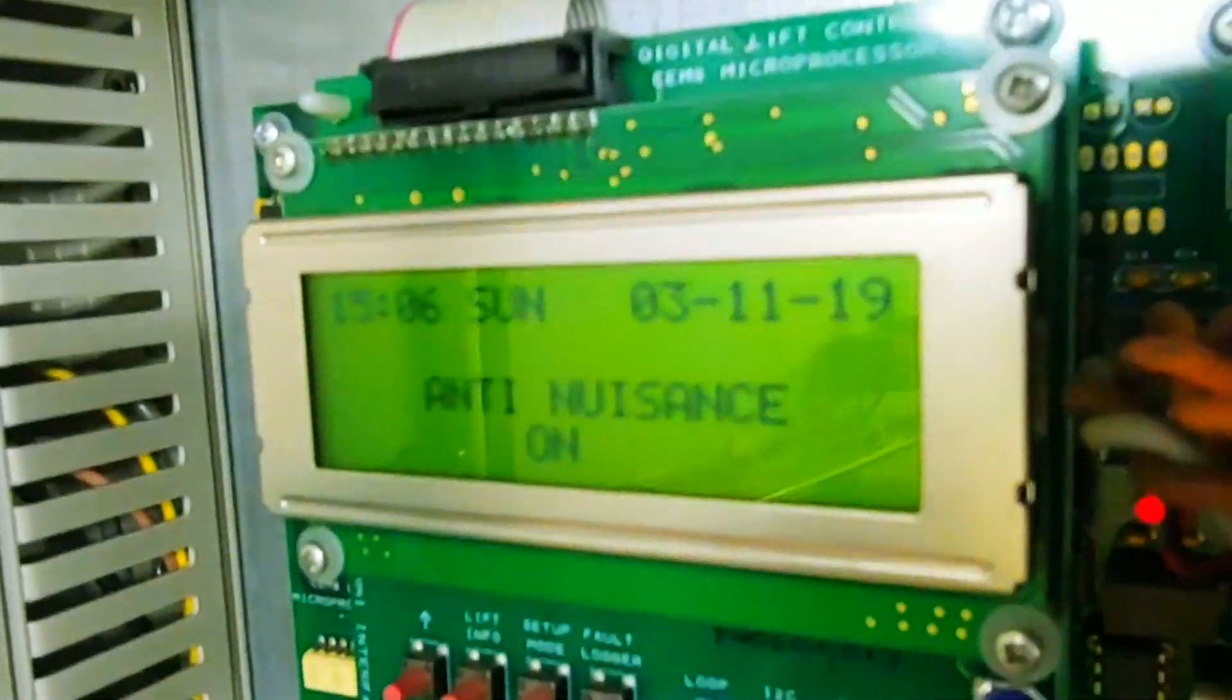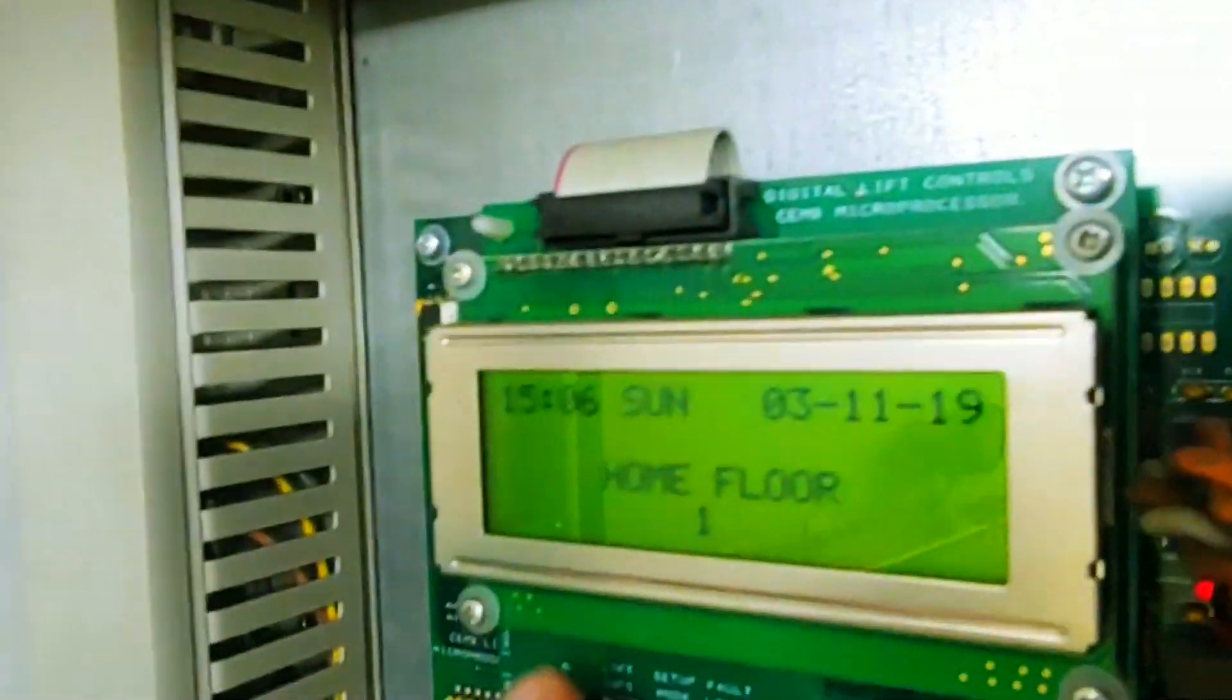It's all there. You've got fire floor, emergency vehicle floor, anti-nuisance where it counts calls, so you press the menu. So that's all quite simplistic.